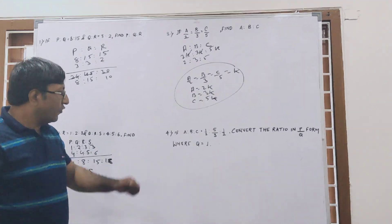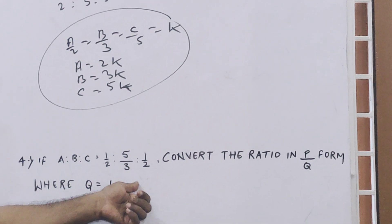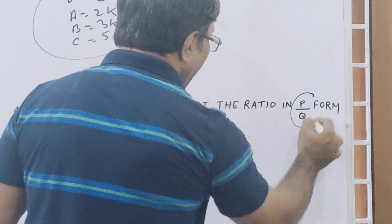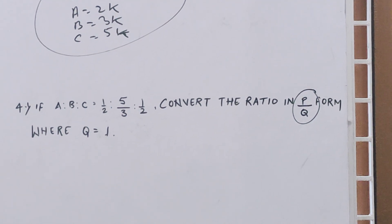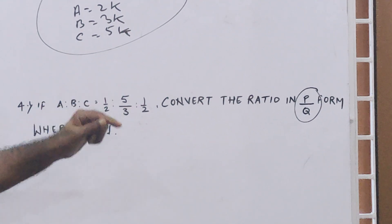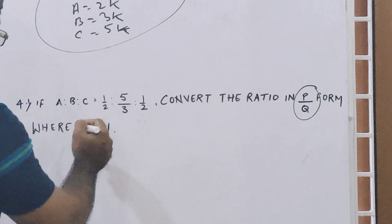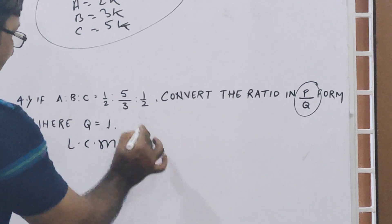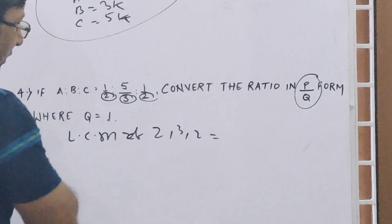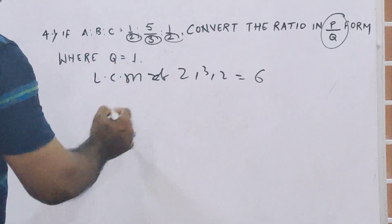Now the fourth question. A ratio B ratio C equal to one-half ratio 5 by 3 ratio one-half. Convert the ratio in P by Q form where Q is equal to 1. This is given for confusion—that is P by Q form. That means we have to convert this fraction ratio into a simple ratio where the denominator should be 1. For this type of question, you find LCM of the denominators 2, 3, 2. So LCM is 6. Multiply each ratio by the LCM.